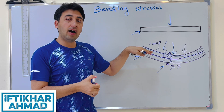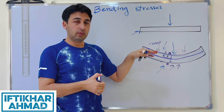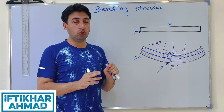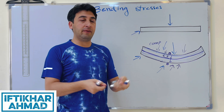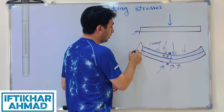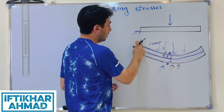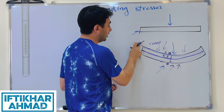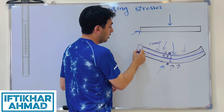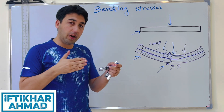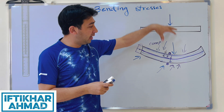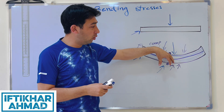That fiber in the center is called the neutral axis or neutral fiber. It will neither have tension nor compression, so there will be no bending stresses at that fiber. This neutral axis passes through the centroid of the cross-section of the beam.